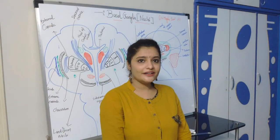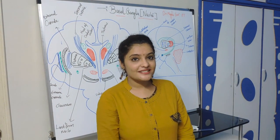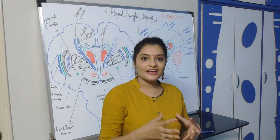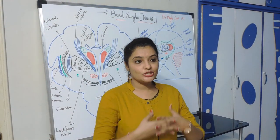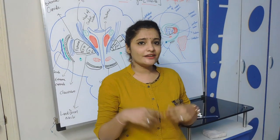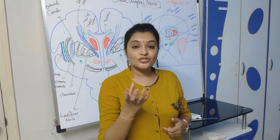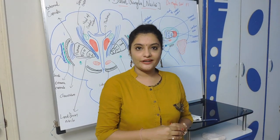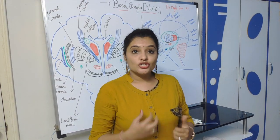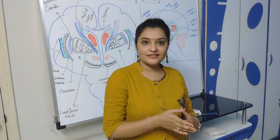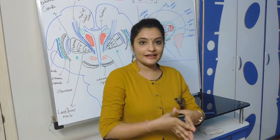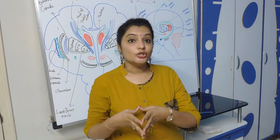Should we call it basal ganglia? What do you mean by ganglia? Ganglia means the collection of cell bodies situated outside the central nervous system. But do you think basal ganglia is situated outside the nervous system? No — it is situated within the cerebral cortex, it is a part of the cerebral cortex. So the term 'ganglia' has been replaced by 'nuclei', and nowadays we call basal ganglia as basal nuclei.